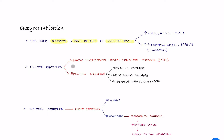A drug can inhibit the hepatic microsomal mixed function oxidases — that is MFOs — or it can inhibit specific enzymes like xanthine oxidase, monoamine oxidase, and aldehyde dehydrogenase. Enzyme inhibition is a very rapid process which can be reversible, and at some times it can be irreversible also.